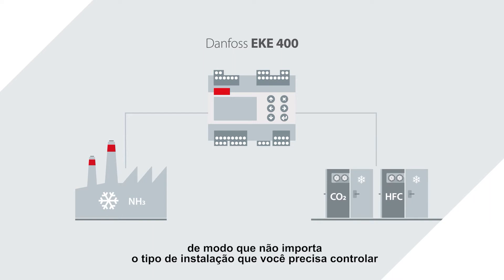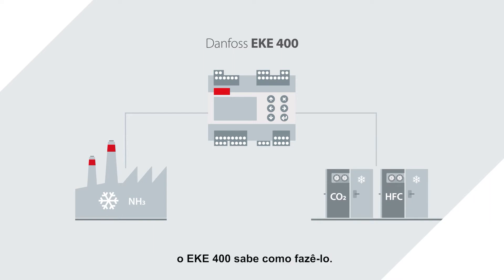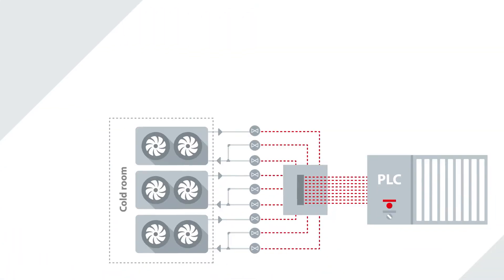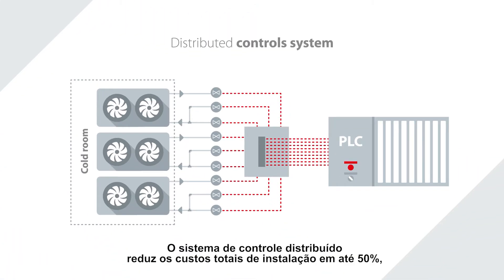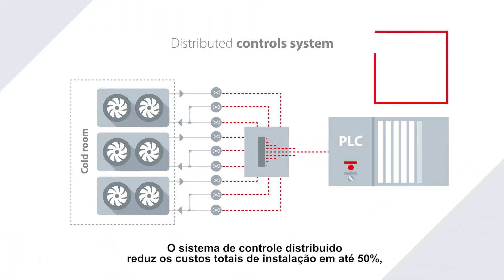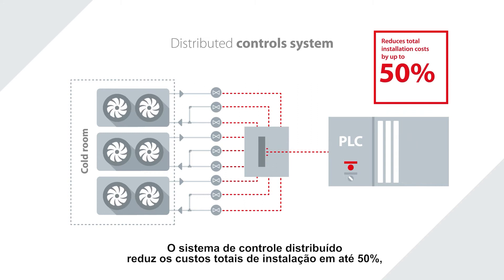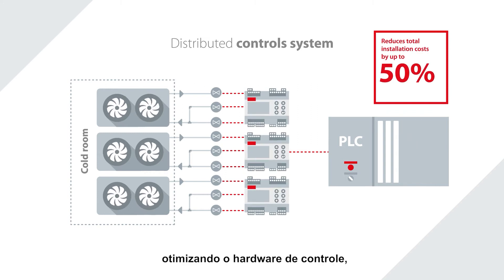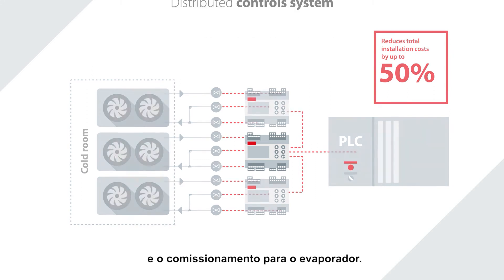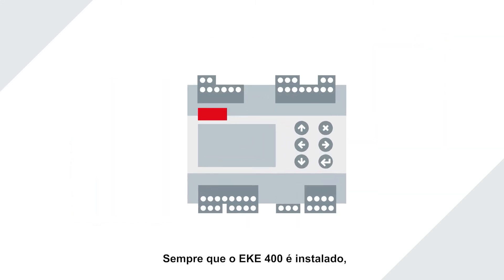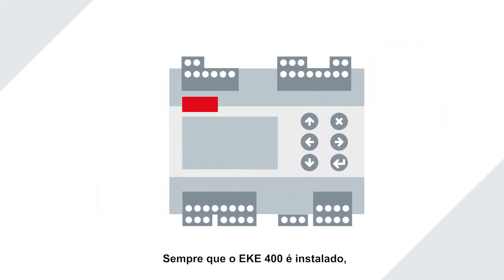No matter what you need to control, the EKE 400 covers it all. The distributed control system reduces total installation costs by up to 50% by optimizing controls, hardware installation, and commissioning for the evaporator.